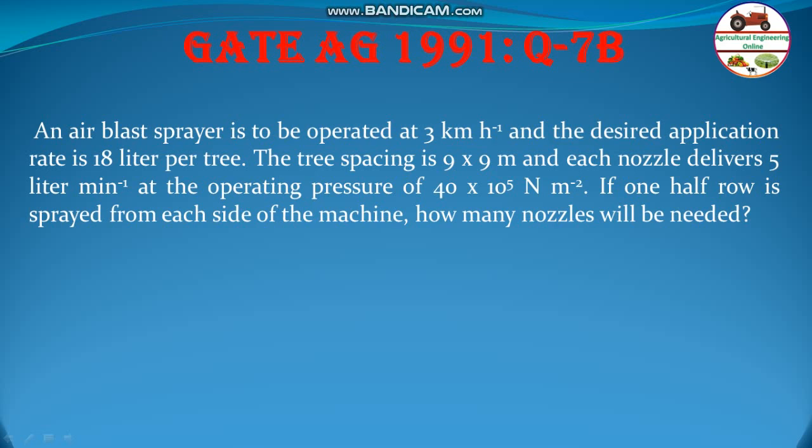Let us solve the problem from GATE 1991 question number 7b - a very small problem. An air blast sprayer is to be operated at 3 kilometers per hour and the desired application rate is 18 liters per tree. The tree spacing is 9 by 9 meter and each nozzle delivers 5 liters per minute at the operating pressure of 40 × 10⁵ Newton per meter square.